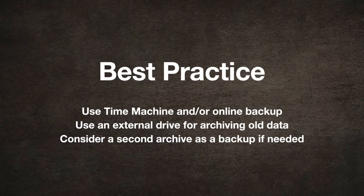The best practice is to have a Time Machine backup going to one external drive, and then a second external drive that you use for archiving — removing things from your primary storage so the only copy is on the archive.